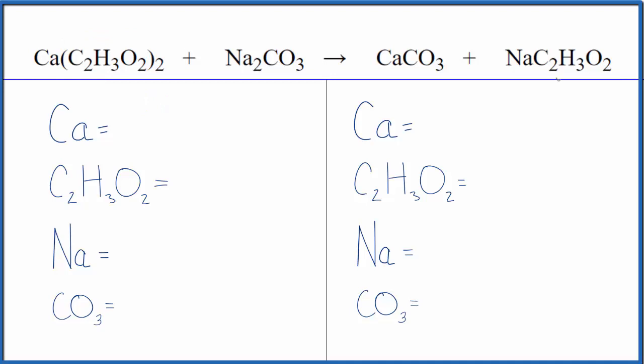Let's count the atoms up. I'll show you a trick to make this easier. We have one calcium, and the acetate ion we have two of them. We're going to count the acetate ion as one thing. So we have two acetate ions, two sodiums, and the carbonate we'll count as one thing - one carbonate on the reactant side.